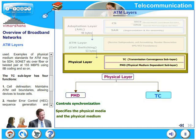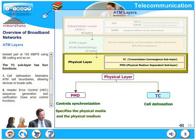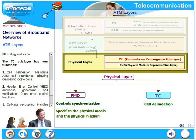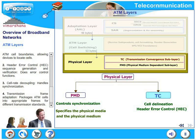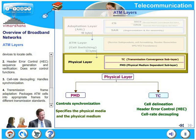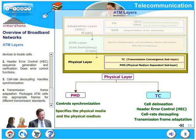The TC layer has four functions. First, cell delineation — it maintains ATM cell boundaries, allowing devices to locate the cells. Second, header error control — this is a sequence generation and verification that performs error control functions. Third, cell rate decoupling — this handles synchronization. Fourth, transmission frame adaptation — this packages ATM cells into appropriate frames for different transmission standards. These are the four functions of the TC sublayer.